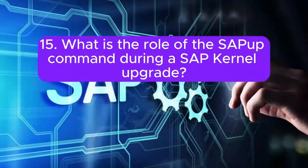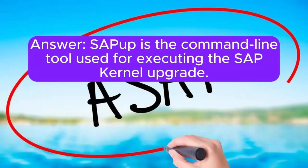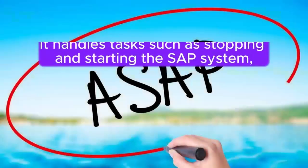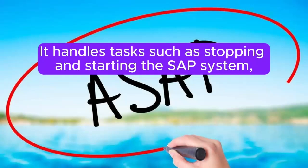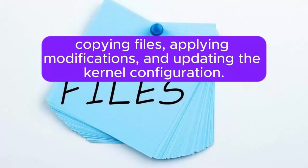15. What is the role of the SAPUP command during a SAP kernel upgrade? SAPUP is the command-line tool used for executing the SAP kernel upgrade. It handles tasks such as stopping and starting the SAP system, copying files, applying modifications, and updating the kernel configuration.